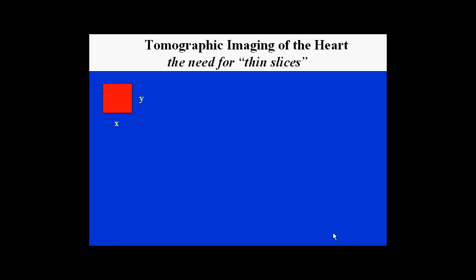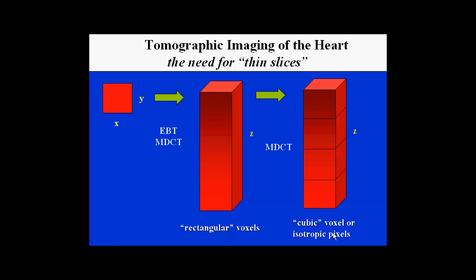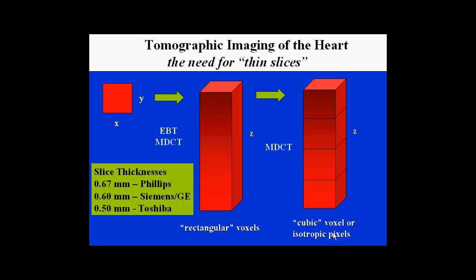In the XY plane, we have excellent resolution using standard CT, well below one millimeter. However, with older multidetector and electron beam CT, there is a Z thickness that results in rectangular voxels. The important innovation with 64-slice CT is that we can acquire images in XY and Z planes that are isotropic — meaning, as with isobars in meteorology, any direction in the XY, Z, or off-axis plane has exactly the same dimension. Slice thicknesses vary by manufacturer: 0.67 millimeters for the 64-slice Philips scanner, down to 0.5 millimeters for the Toshiba 64-slice scanner.